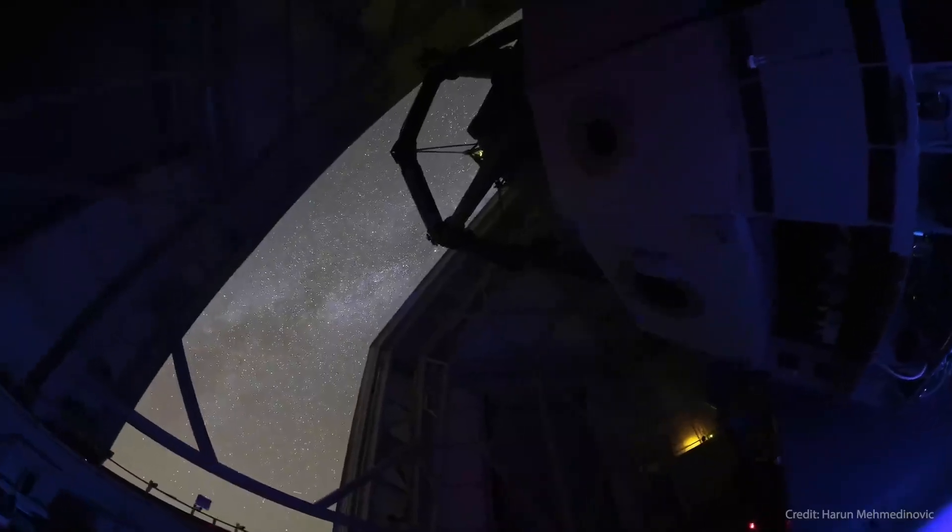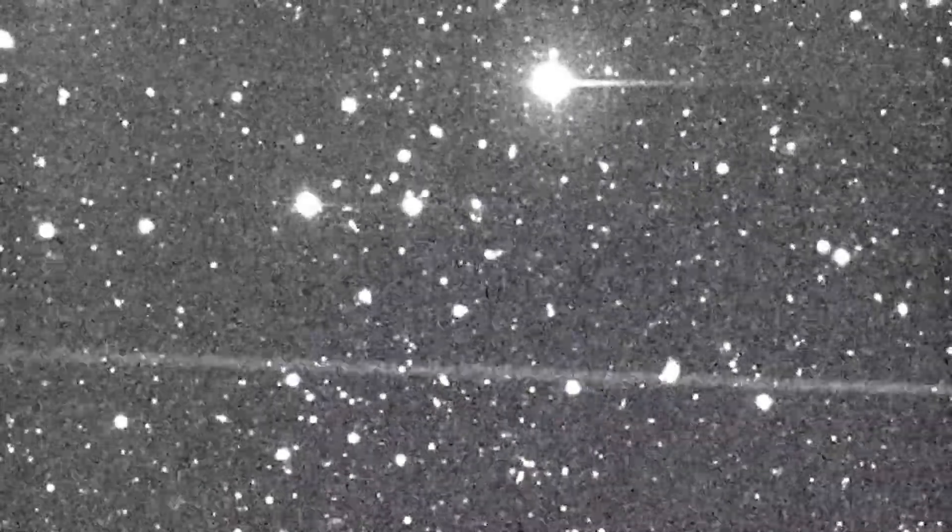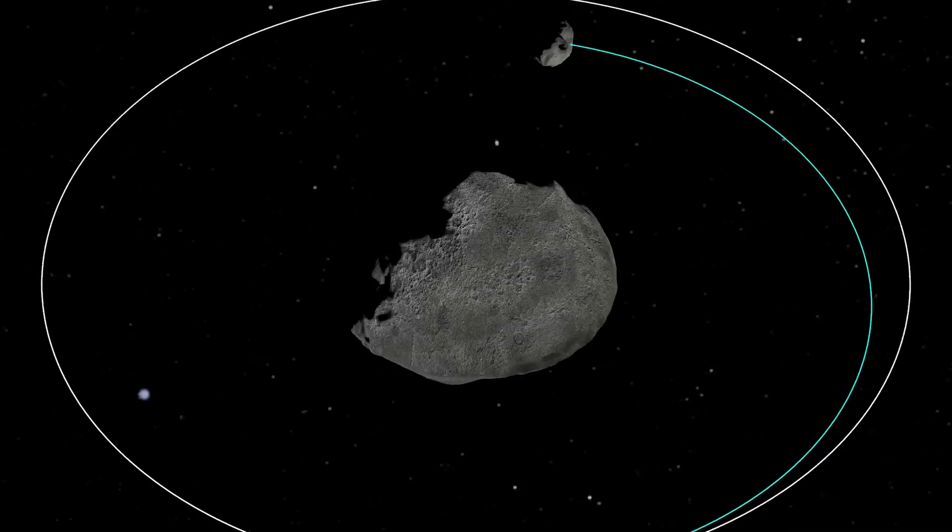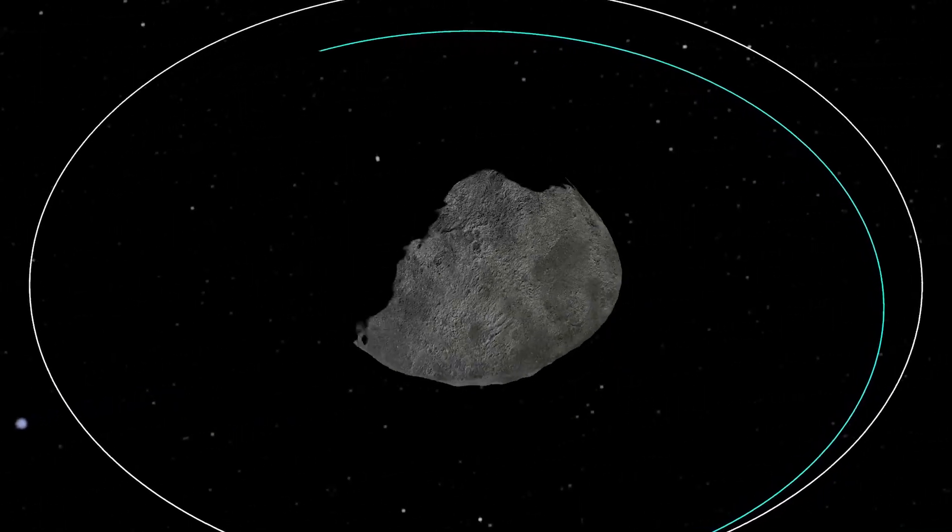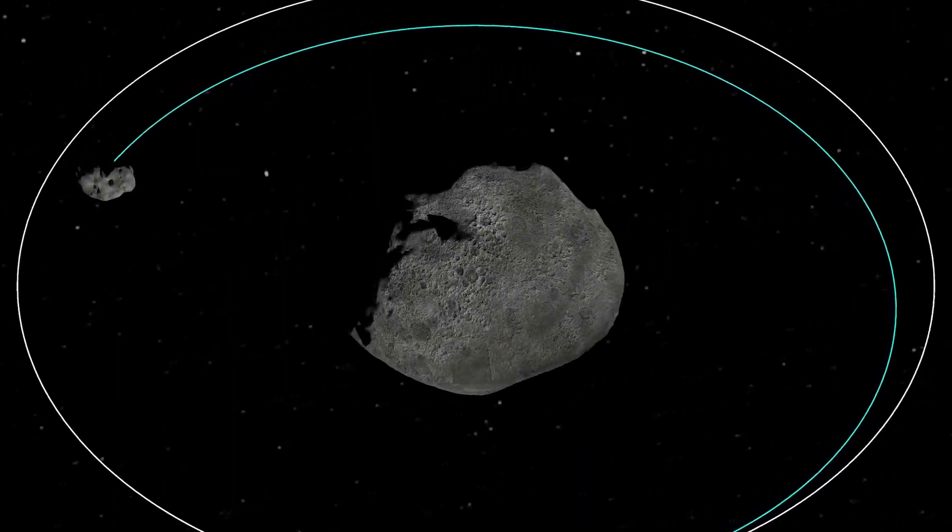So after impact, we will then be able to go back and start observing intensely, looking for those mutual events, those eclipse events, of Dimorphos passing in front of and behind Didymos. And on each one of these frames, we're measuring the brightness to assess whether or not it's undergoing one of these events. And using those to determine the orbit period of Dimorphos around Didymos.